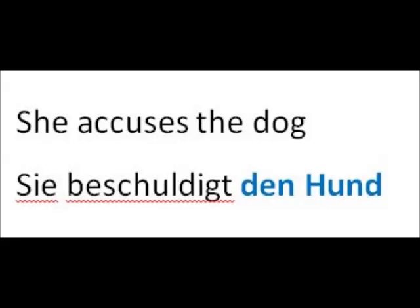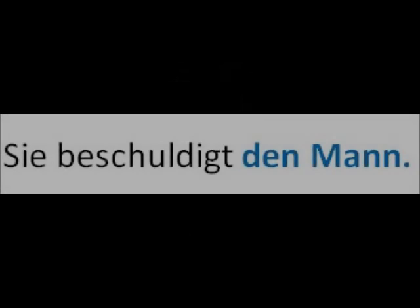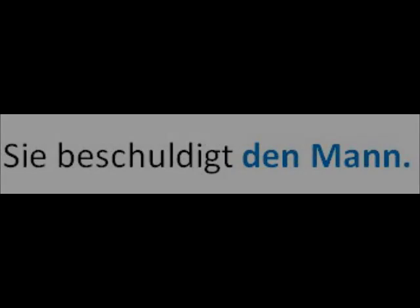Let's look again at the example: 'sie beschuldigt den Hund.' If it hadn't been her dog but a man alone in the kitchen, she would have probably accused him of stealing her chicken. The sentence with a man instead of a dog would be: 'sie beschuldigt den Mann.'